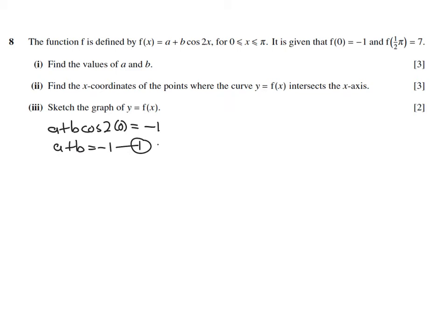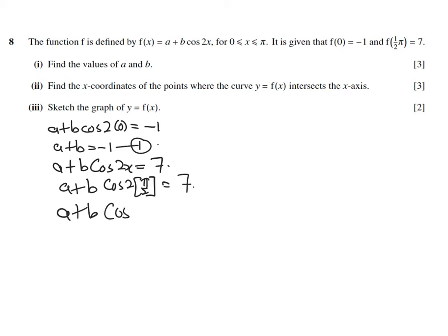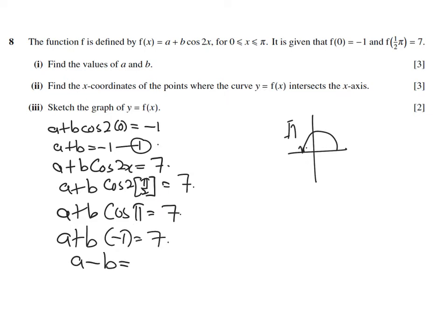The next equation comes from when x equals π/2 and f(x) equals 7. Substituting: a + b·cos(2 × π/2) = 7, which gives a + b·cos(π) = 7. Since cos(π) = negative 1 (second quadrant), we get a + b×(−1) = 7, so a − b = positive 7. This is our second equation.